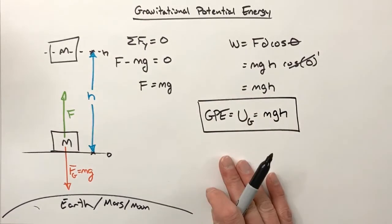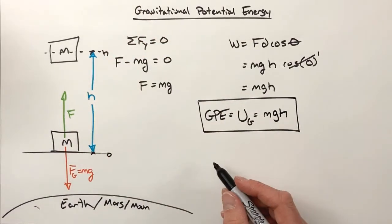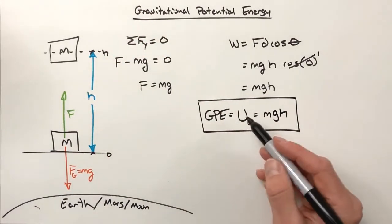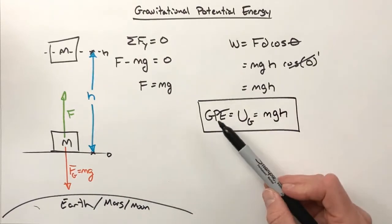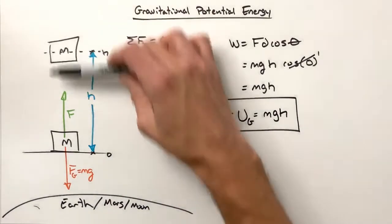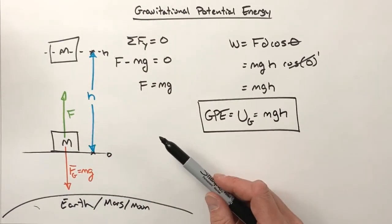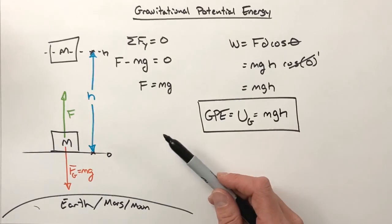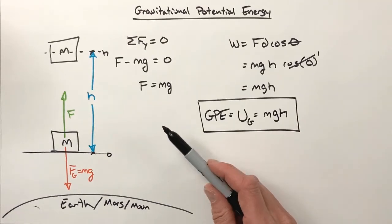And that is our equation for gravitational potential energy. Now how this fits in with kinetic energy, how we can transfer energy from potential to kinetic if something falls, and mathematically how that all works out - well, that's a situation for another day. So with that being said, that's all for now.